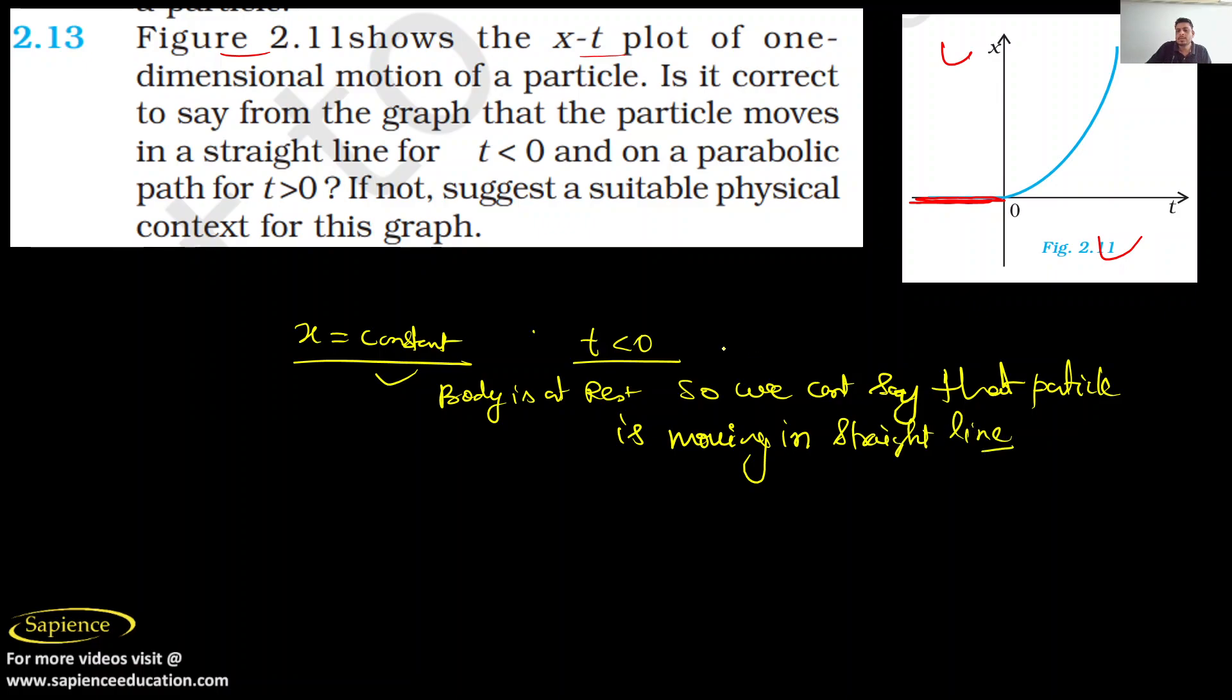For the case of t less than zero and on a parabolic path for t greater than zero, see here if a parabolic path is there, it means that x is equal to some constant k into t square.